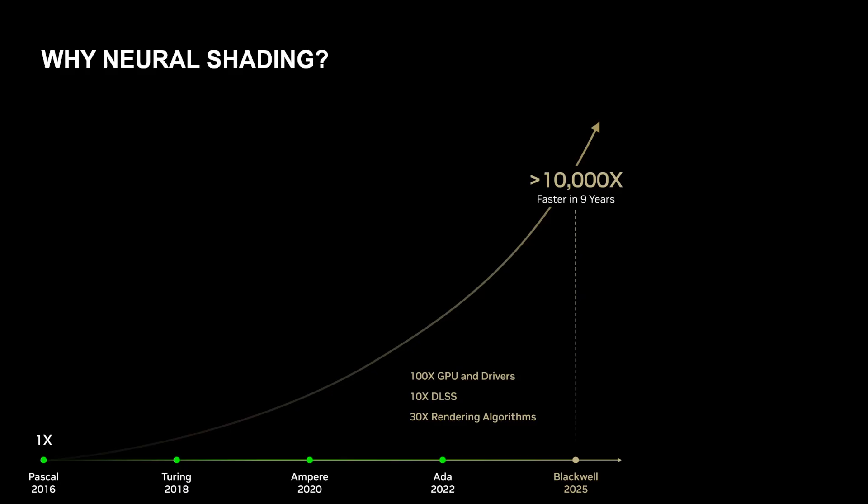Ray tracing has come a long way. If you crunch the numbers on how long it takes to get a path traced frame at the same quality, you can get it today about 10,000 times faster than you could 10 years ago. This sounds like an incredibly large number, but it's a combination of a few different things: the hardware itself getting faster, some of that is DLSS, and some of that is the rendering algorithms getting better, so that each ray you shoot is worth more.